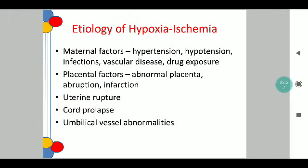If you consider the manifestations of hypoxia and ischemia together, it more or less comprises of the same factors because hypoxia ischemia is a sequel of perinatal asphyxia. The same maternal factors of hypertension, hypotension, TORCH infections, vascular disease, and drug exposure will persist. Placental factors such as abnormal placenta — abnormal shape, abnormal position — also have a role, along with other factors such as uterine rupture and cord prolapse as well.